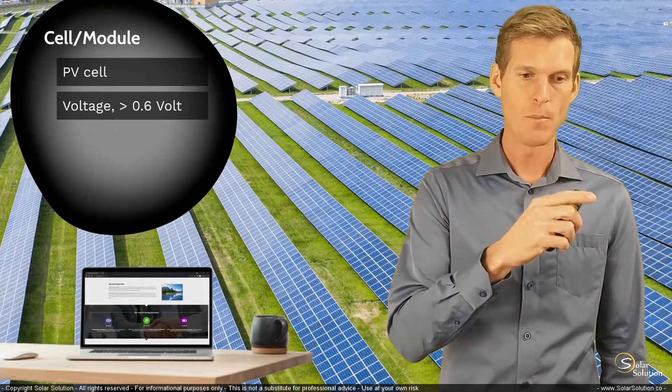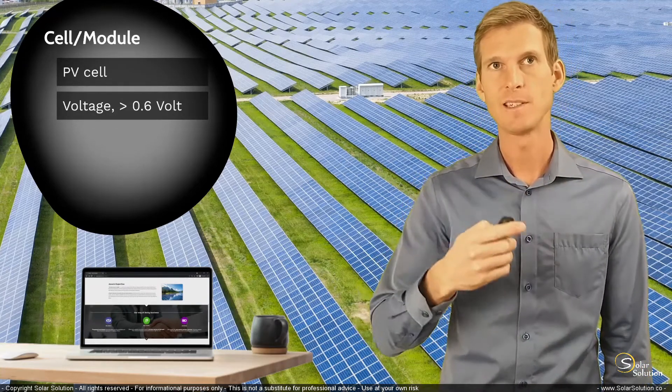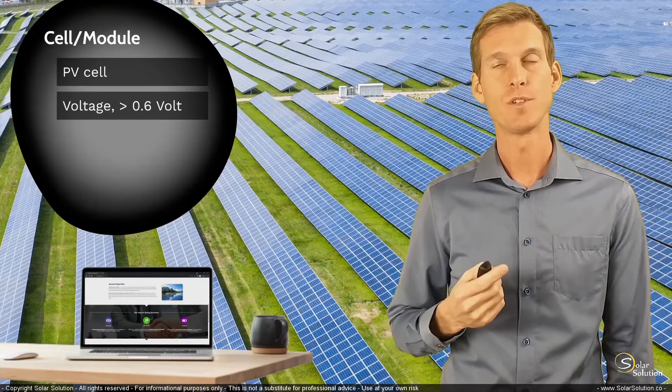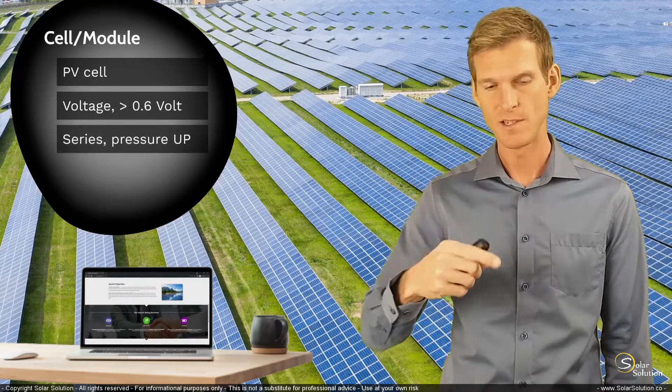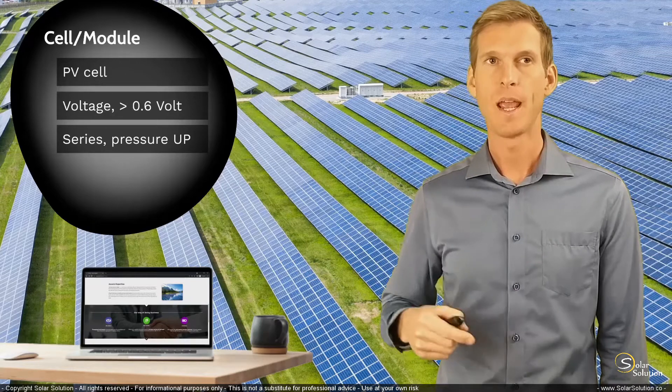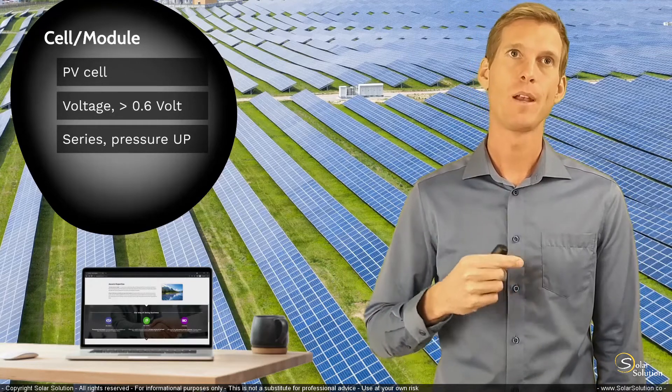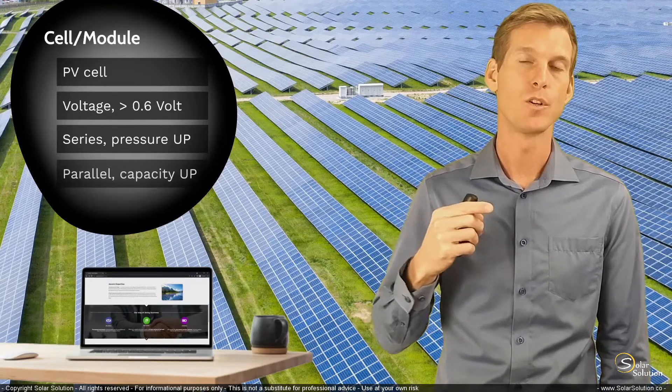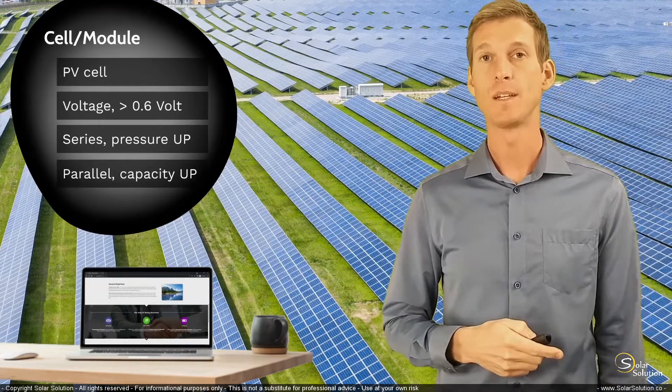And we know that if we combine the cells in series, the electrical pressure or the voltage goes up. If we combine it in series, the voltage adds up. And if we combine the cells in parallel, the amperage, so the current of your solar module adds up, increases.